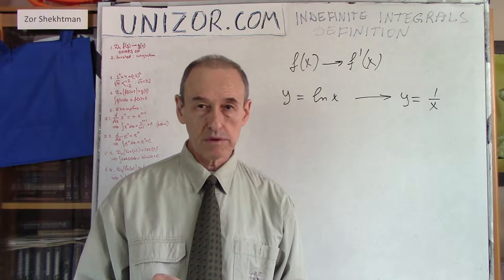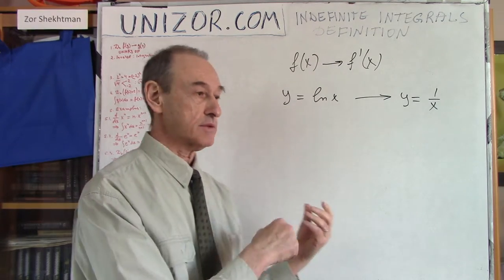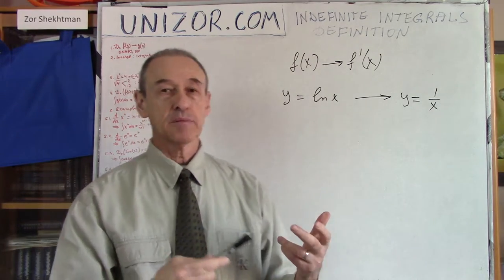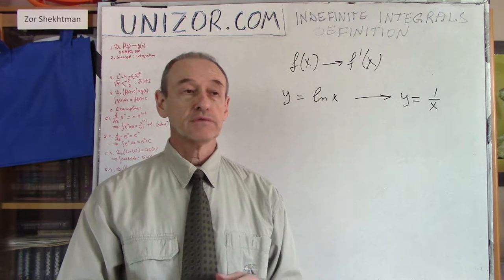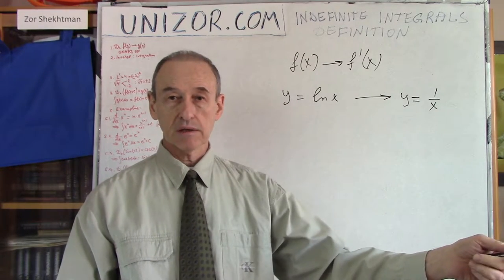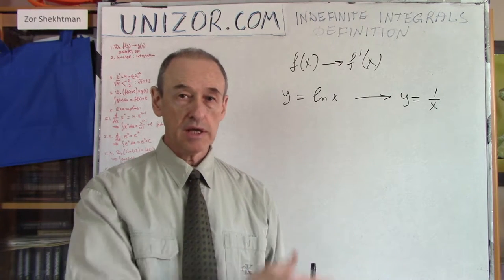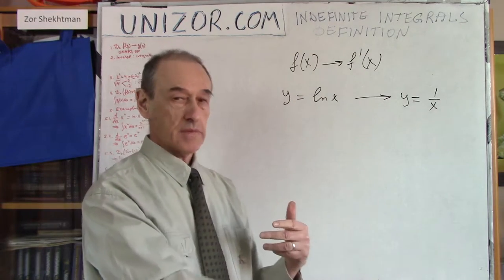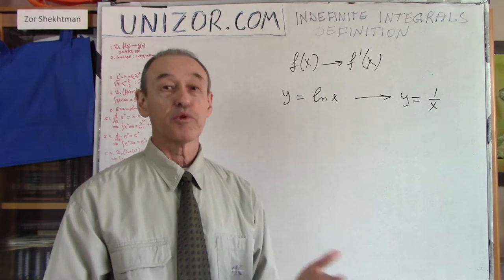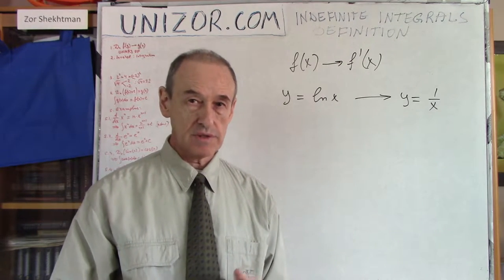What is always very important with operations is their invertibility. If we can get from A to B, can we get from B to A? For instance, if you apply the operation of adding 1 to a number — from 5 you get 6, from 27 you get 28 — is there an inverse operation? Yes, it's subtraction of 1. From 6 we get 5, from 28 we get 27. So there is always an operation and an inverse operation.